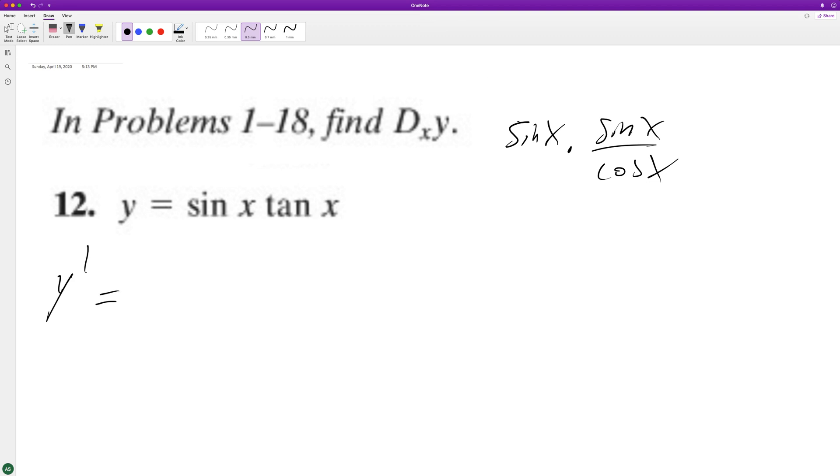So y prime is going to be equal to the derivative of sine is cosine of x times the tangent. And then the derivative of tangent x is going to be equal to secant squared x.